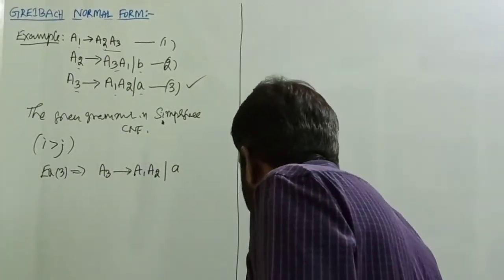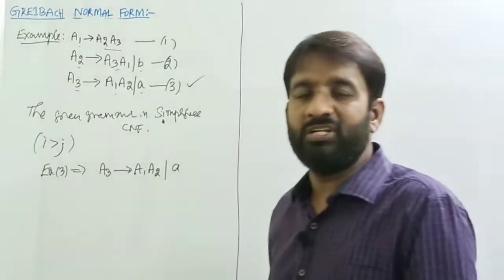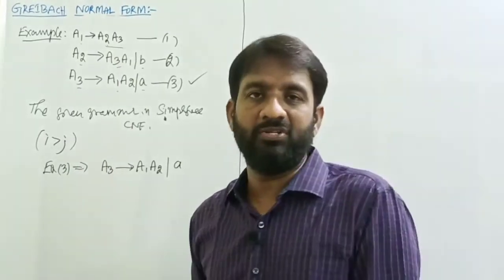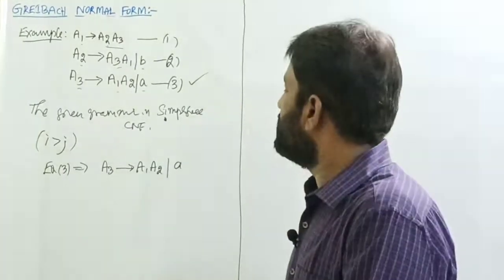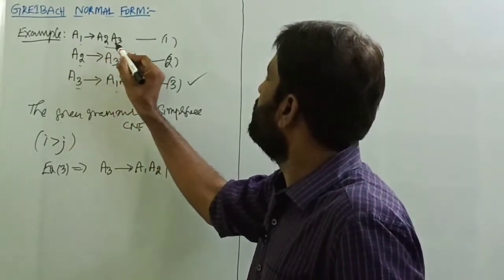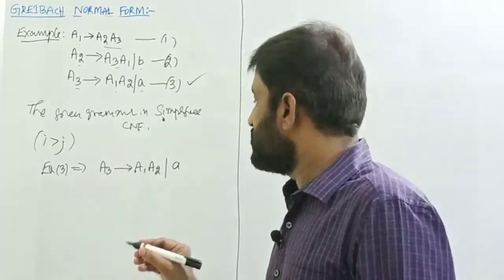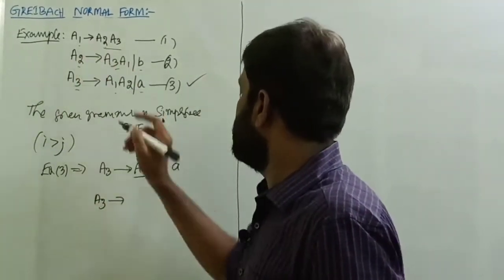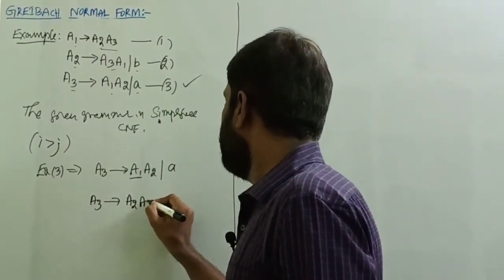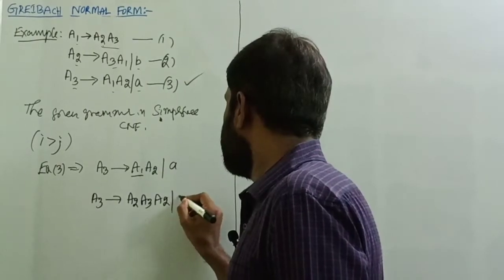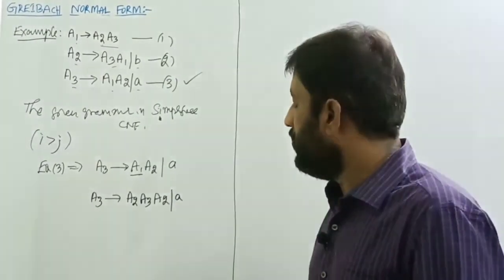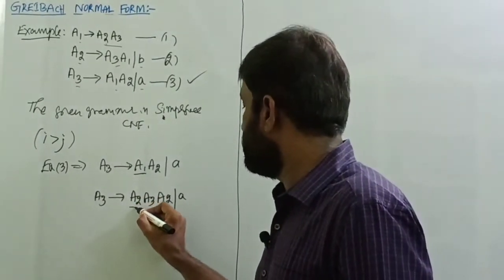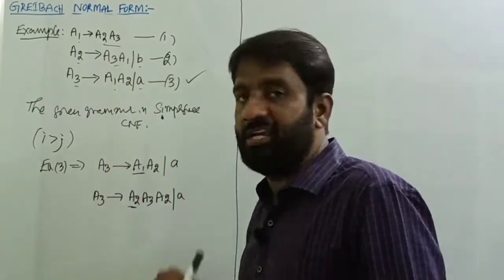We have substitution lemma (Lemma 1) and elimination of left recursion (Lemma 2). We apply the substitution lemma: substitute A1 productions — which is A2 A3 — into the A3 production. So A3 becomes: A3 tends to A2 A3 A2 | a. Now substitute A2 productions (A3 A1 | b) into the A3 equation.